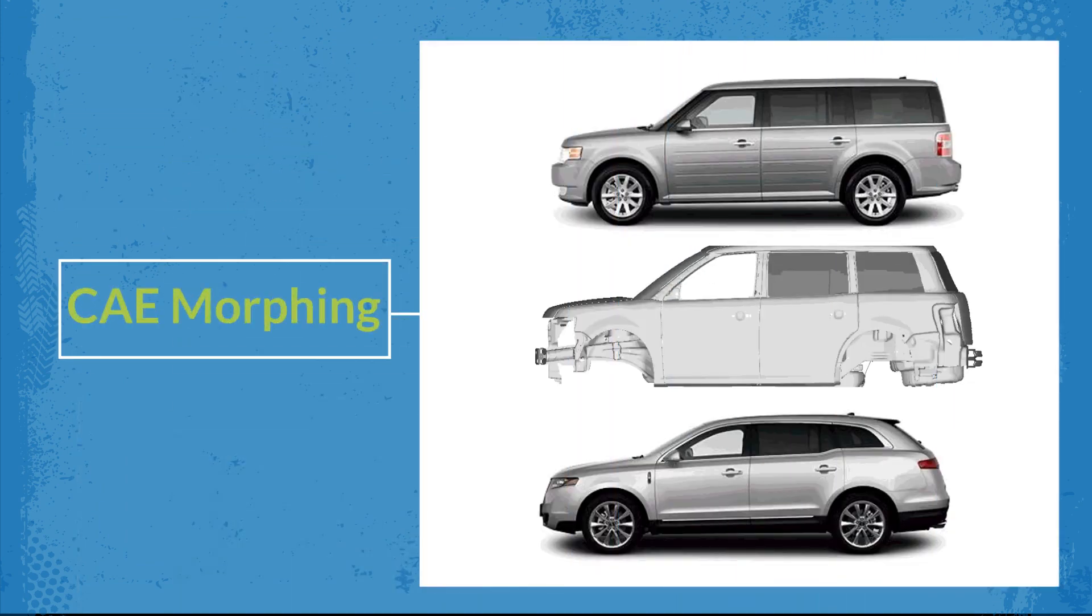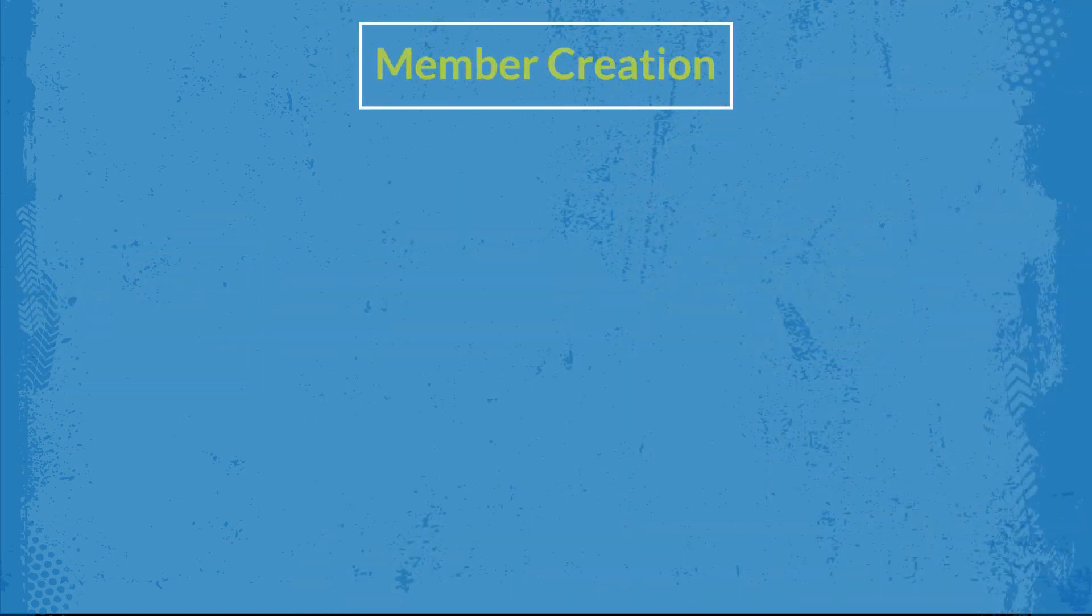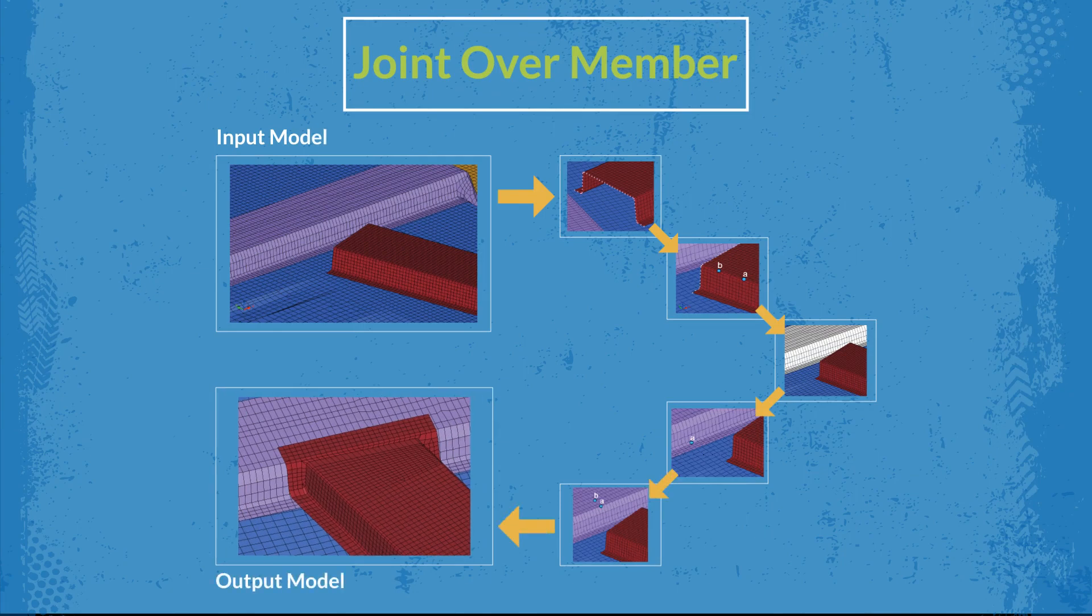CAE Morphing: morph existing FE and CFD models to match new geometry and or to new proportions. Concept modeling: cutting, blending, and stitching functions to create early-stage concept FE and CFD models.